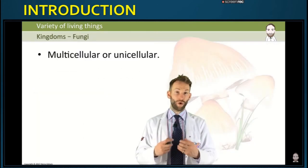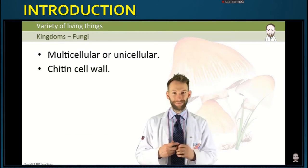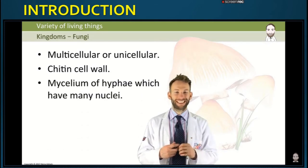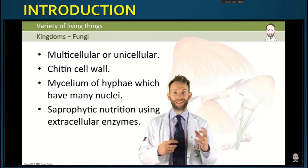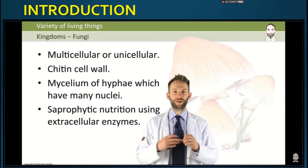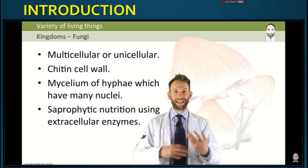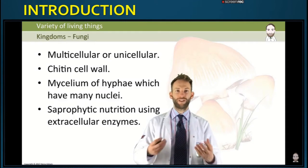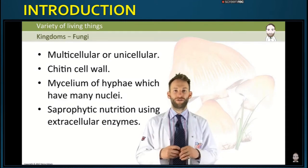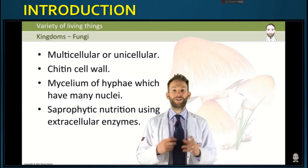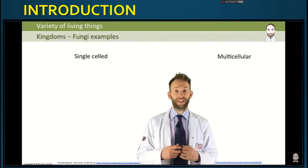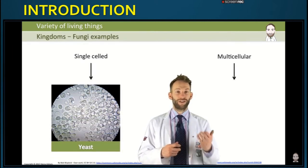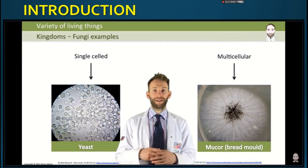Fungi can be multicellular or unicellular. The cell wall is made of chitin, and it is made of a network of fibers called a mycelium of hyphae. They have many nuclei — they are multi-nucleated. They feed by saprophytic nutrition using extracellular enzymes: they secrete enzymes onto their food, the food breaks down externally, and then they absorb the resulting smaller nutrients by diffusion. They store their carbohydrate as glycogen, the same as animals. A single-celled example is yeast, used for baking and brewing. A multicellular example is mucor, which grows on mouldy bread or fruit.